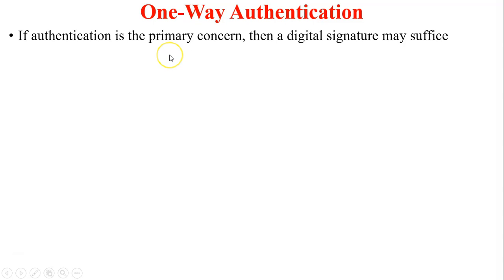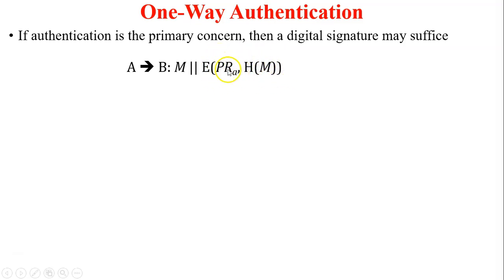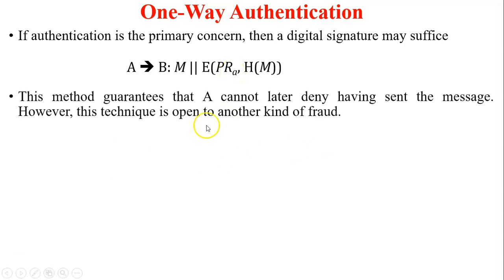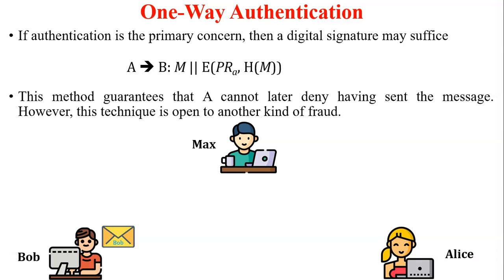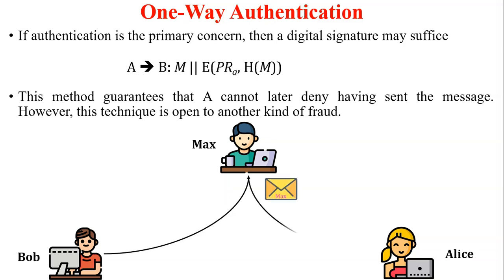If authentication is the primary concern, use a digital signature. The message is appended with a digital signature encrypted using the private key of user A. User B decrypts the digital signature with the public key of user A and authentication is proved. However, this technique is open to fraud. For example, employee Bob prepares an email with a digital signature to share an idea with his boss Alice. Employee Max captures Bob's email, removes Bob's digital signature, adds his own signature, and sends it to Alice — so Max takes all the credit. This is one kind of fraud.